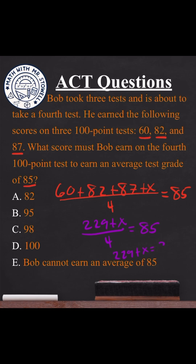So this gives us 229 plus x equals 340. Subtract 229 to get x by itself. We see that x would have to be 111 points. We now know that Bob cannot earn an average score of 85 points.